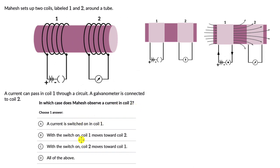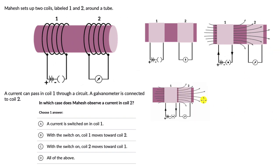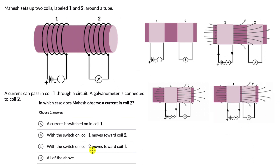The second situation: the switch on coil one is on, current is flowing in coil one, and coil one is moved towards coil two. In this case, when coil one moves towards coil two, more magnetic field lines will pass through coil two, causing a change in flux. Since changing flux induces current, there will again be a current in coil two.